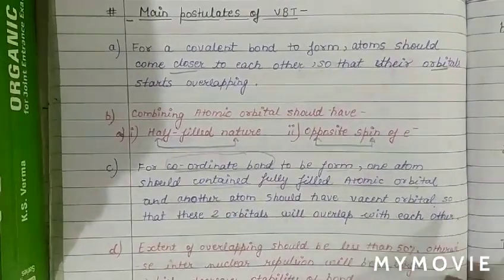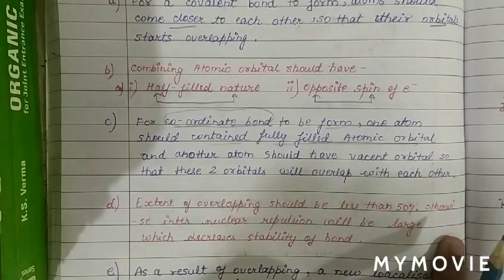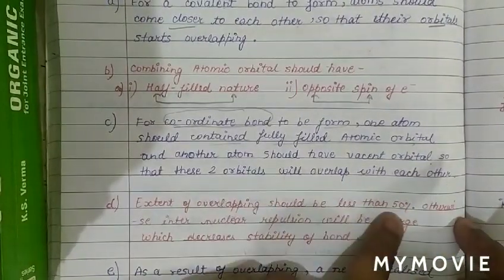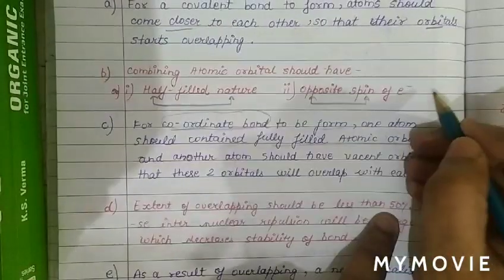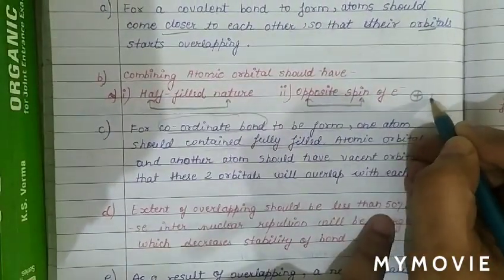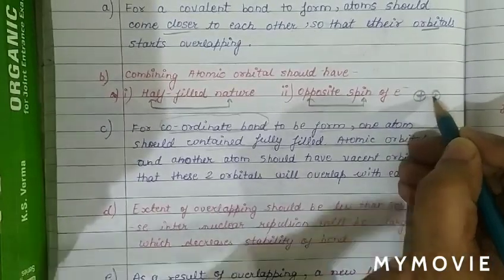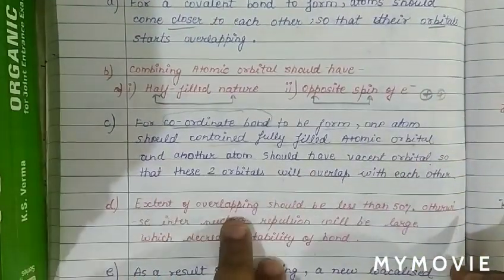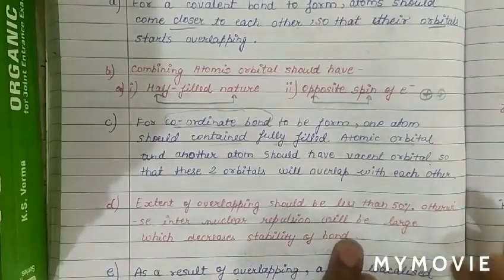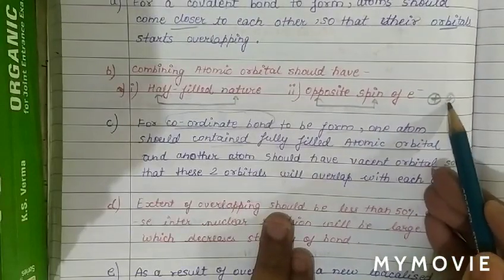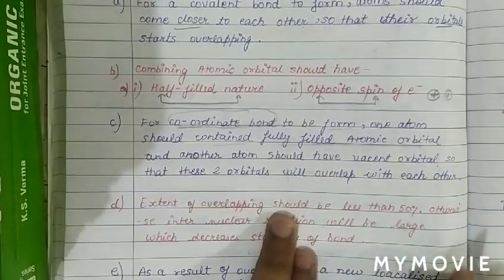The strength and stability of a bond depends on the extent of overlapping. The extent of overlapping should be less than 50%, because if overlapping exceeds 50%, the nuclei come too close together, like charges repel each other, and inter-nuclear repulsion increases, decreasing the stability of the bond.